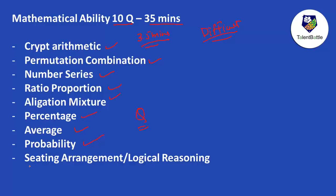There can also be questions based on sitting arrangement or logical reasoning — for example, seven people are given, and you have to determine who attended the party, who didn't, or who was wearing which color dress. We will conduct YouTube sessions on these questions too. Remember, mathematical ability is going to be difficult even though fewer questions are given with more time.